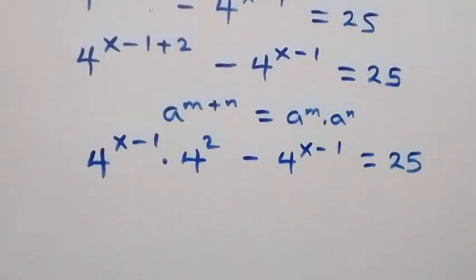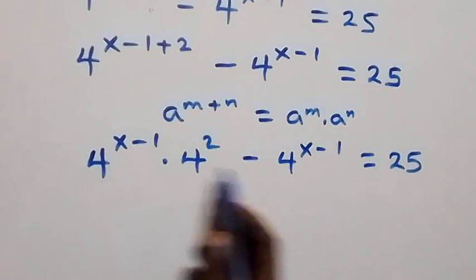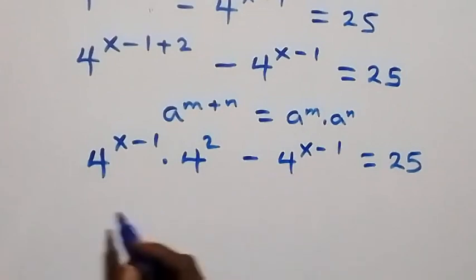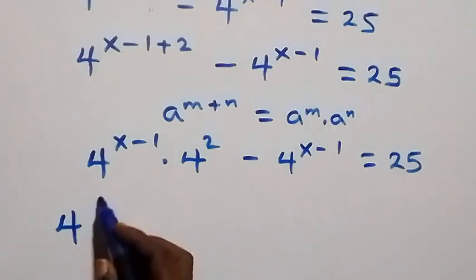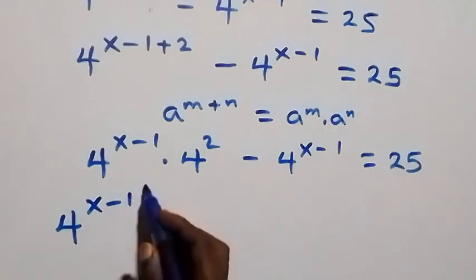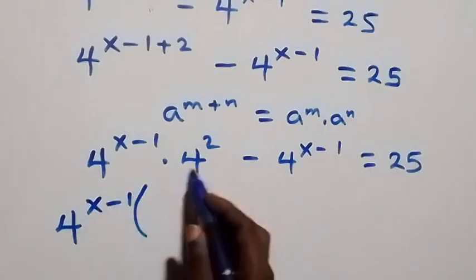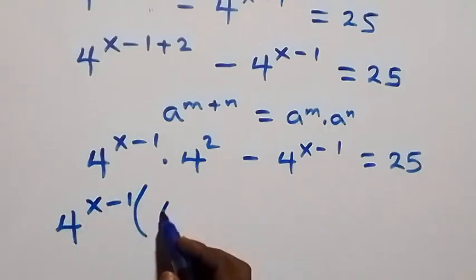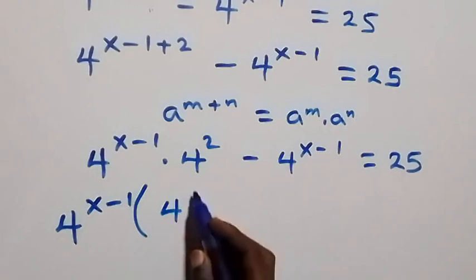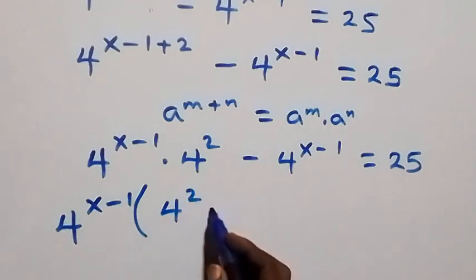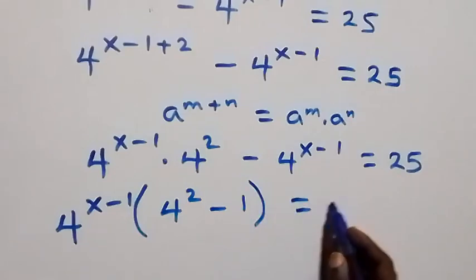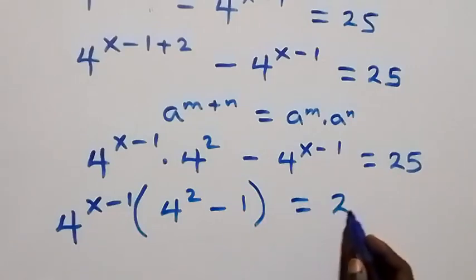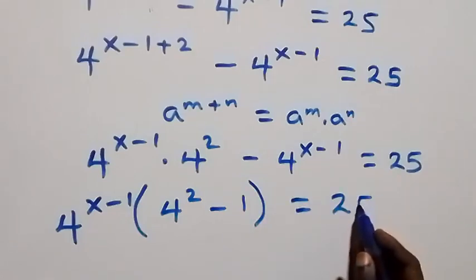Now we have four raised to power x minus one common, so we factor that out. We have four raised to power x minus one times four squared minus one, equals to 25.